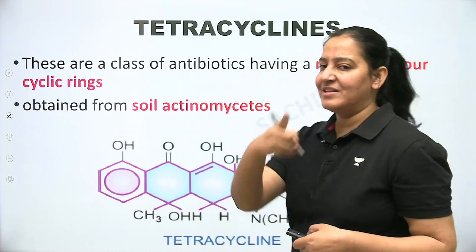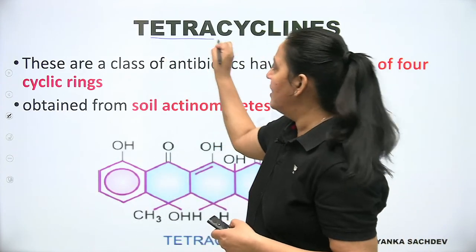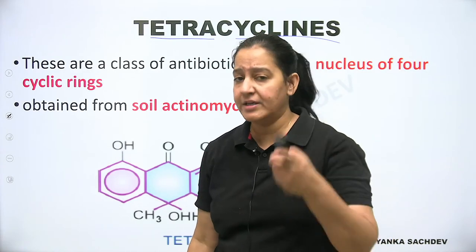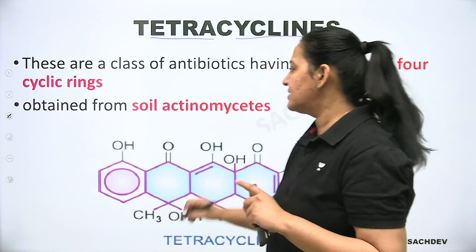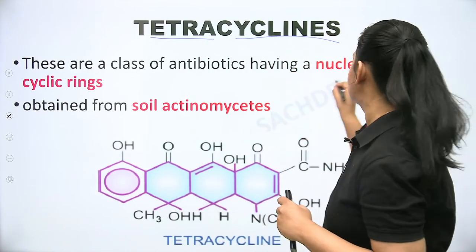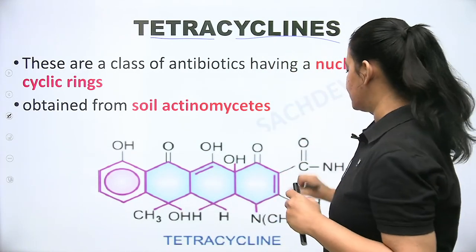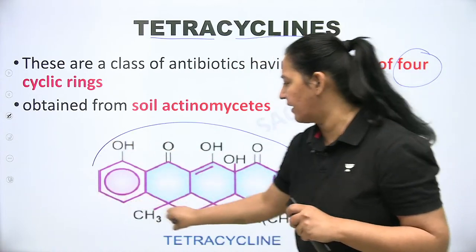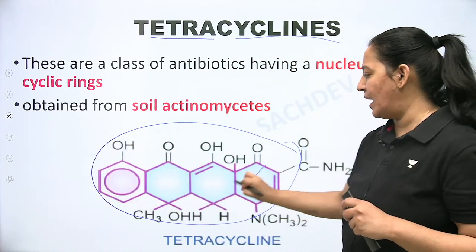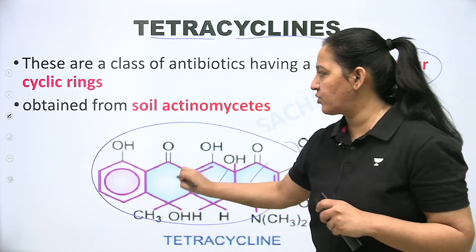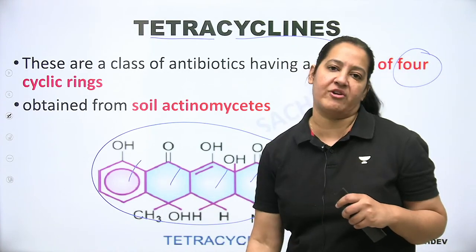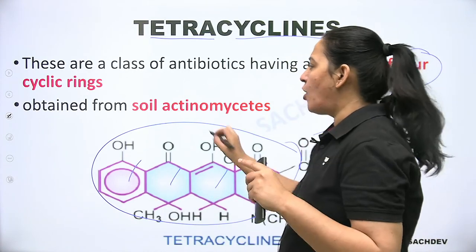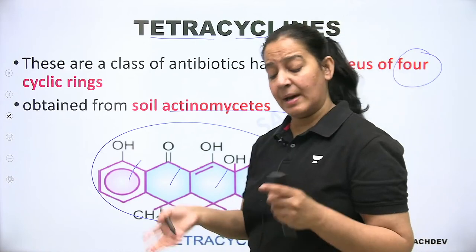Spectrum of tetracyclines — they are broad spectrum. They kill gram-positive cocci, gram-negative cocci, gram-positive bacilli, gram-negative bacilli, rickettsiae, chlamydiae, mycoplasma, spirochetes, and some protozoa. So write 'broad spectrum' and list all these organisms. As a doctor, knowing spectrum is very important — when a patient comes with a bacterial infection, you need to know which antibiotic is active against which bacteria.